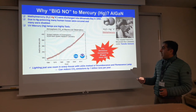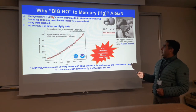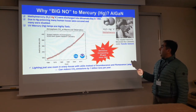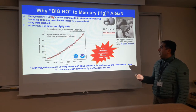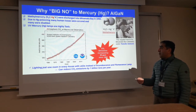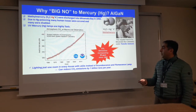Why is this big light source not good? Because it is based on the toxic mercury lamp — methyl mercury was discharged into Minamata Bay in 1950. Due to mercury poisoning, many human losses occurred and many were disabled.